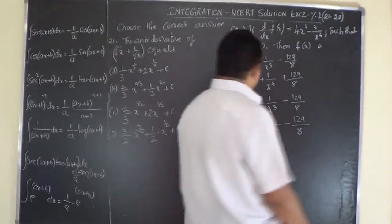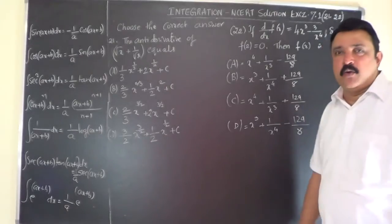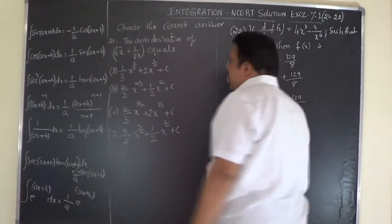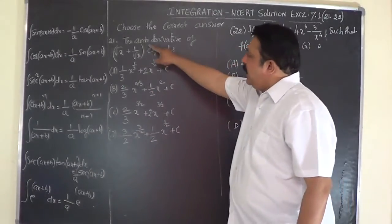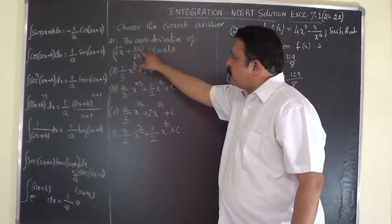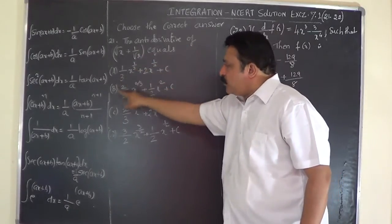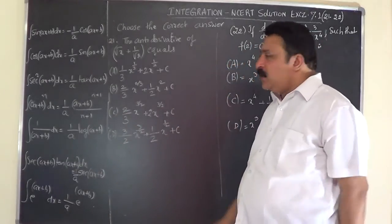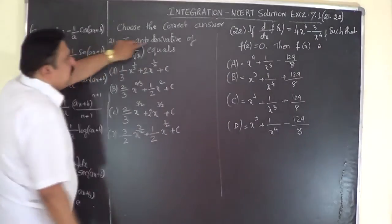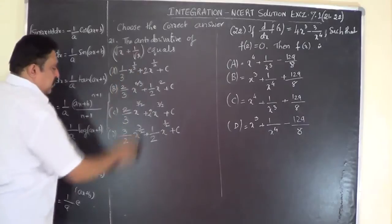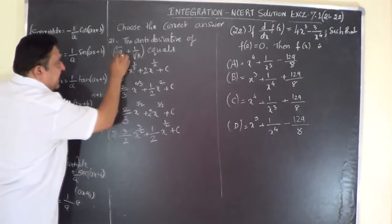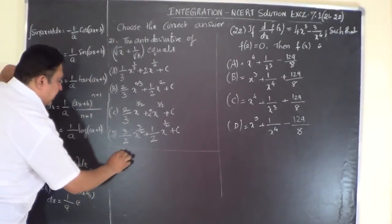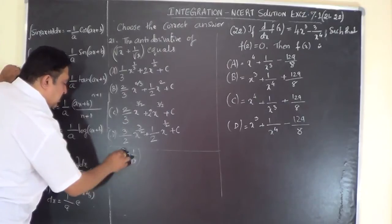We have two MCQ questions, number 21 and 22. Question 21: the antiderivative of √x + 1/√x equals — there are four options (a, b, c, d). The antiderivative is nothing but the integral of this function, that is, we have to integrate (√x + 1/√x) dx.